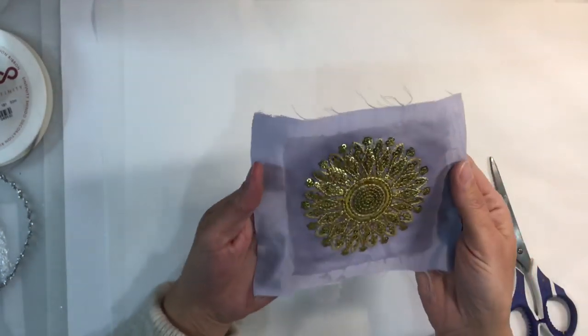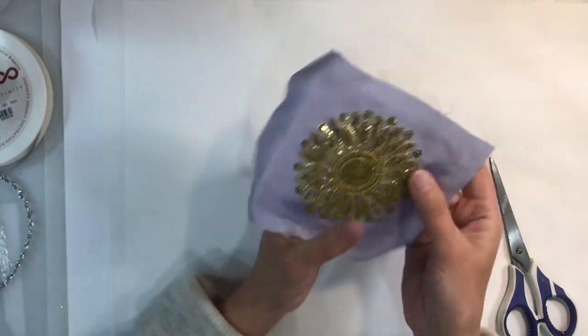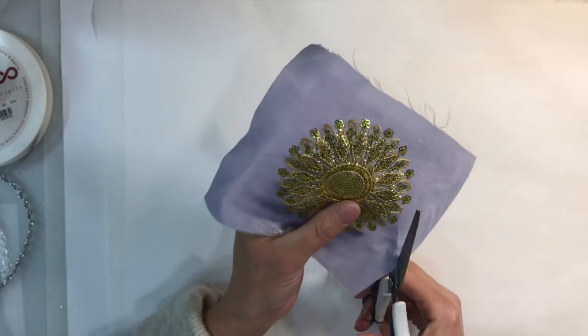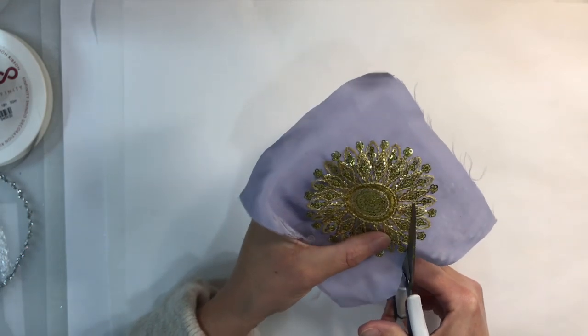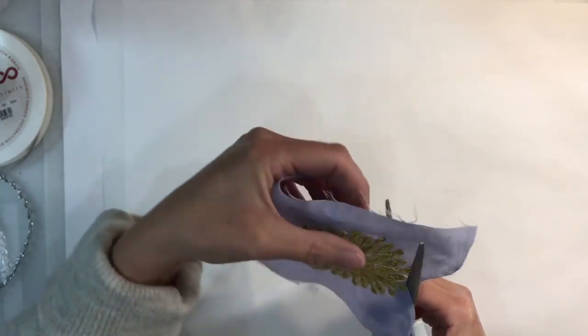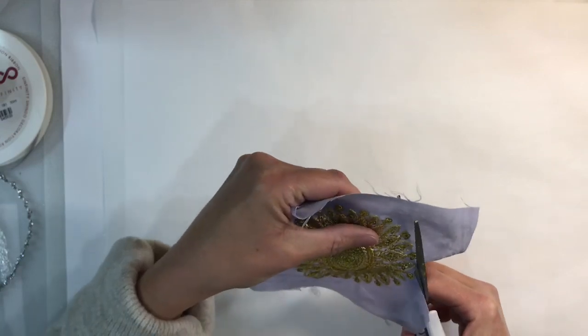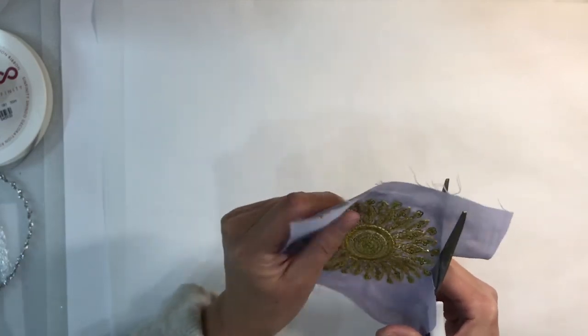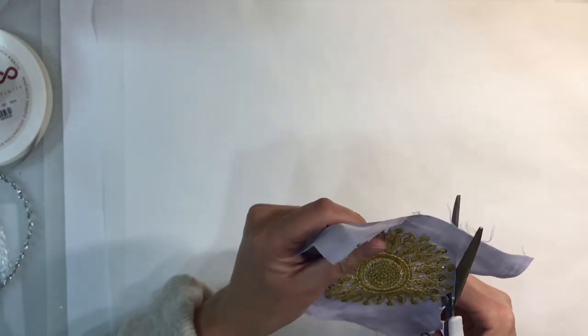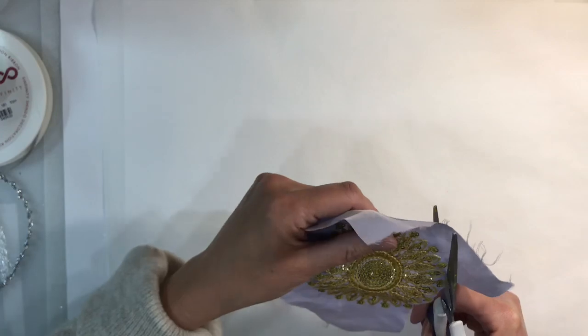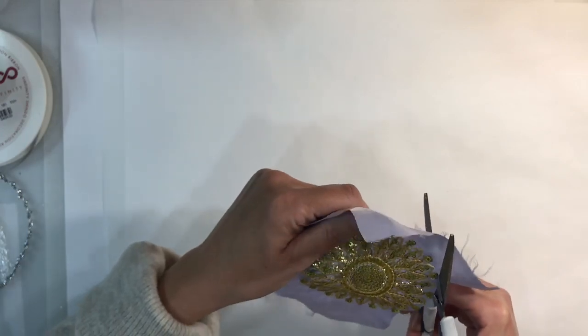So my sari fabric has dried now. And what I want to do is just cut around the shape. And of course because I've used glue for this, it's not going to fray. So there is method in my madness. So that's why I've done it. Just so that it sort of holds it intact. And I can cut all around the outside just like this. So I've cut around my piece of sari fabric and you can see because of the glue that it's all held intact. There's no fraying or anything like that.